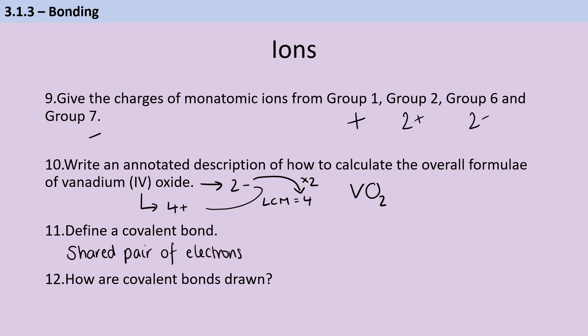A covalent bond is a shared pair of electrons. And then, of course, we have that electrostatic attraction between that shared pair of electrons and the two positive nuclei of the atoms. And that's what holds the whole thing together. But the key thing is this shared pair of electrons. And we draw that covalent bond with a single straight line between atoms.